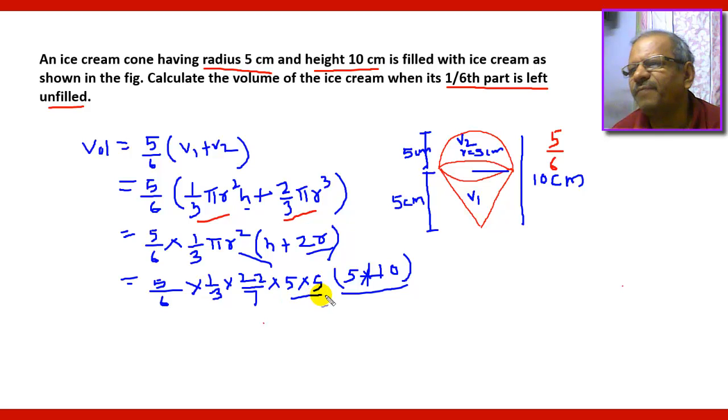So 10 plus 5 will be 15. 5 multiplied by 5 will be 25, and so you will get 5 by 6 multiplied by one third, multiplied by 22 by 7, multiplied by 25, multiplied by 15.